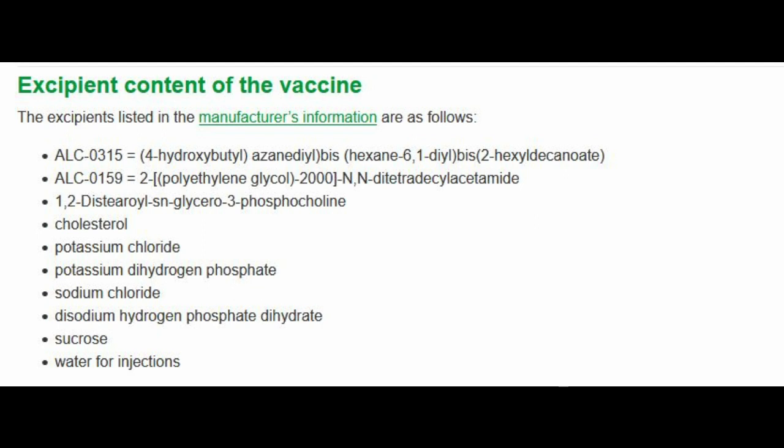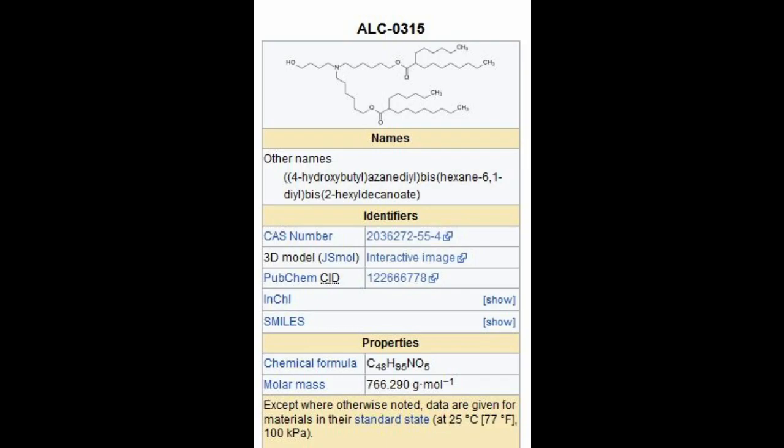Starting with ALC0315: everything within that ingredient is ionizable, which means it can be given a positive charge. The RNA has a negative charge, which means it's attracted — it sticks together with the contents in 0315. It's a bit like magnetism; opposites attract. It's important for this vaccine because you don't want the components splitting apart once it's inside you — that would cause a whole load of trouble. So positive and negative charges make them stick together.